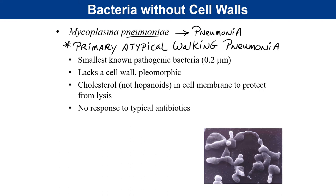Walking implies patients can be up and walking around, not necessarily bedridden, even though the fluid buildup in their lungs is still dangerous. It's often difficult to diagnose because doctors order a gram stain and it comes up negative. These cells have no gram reaction and are also very small — just a fifth the size of ordinary bacteria like Strep, at 0.2 micrometers — and their shape is pleomorphic.